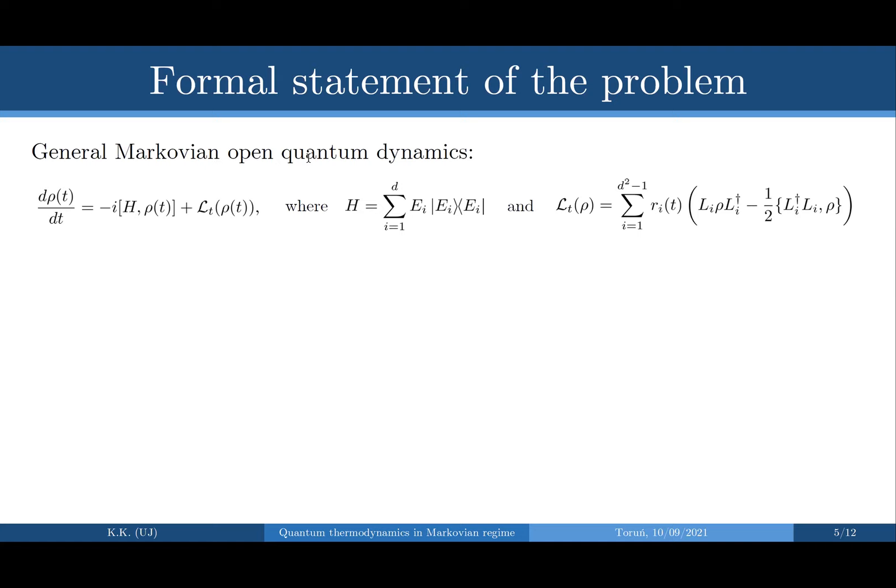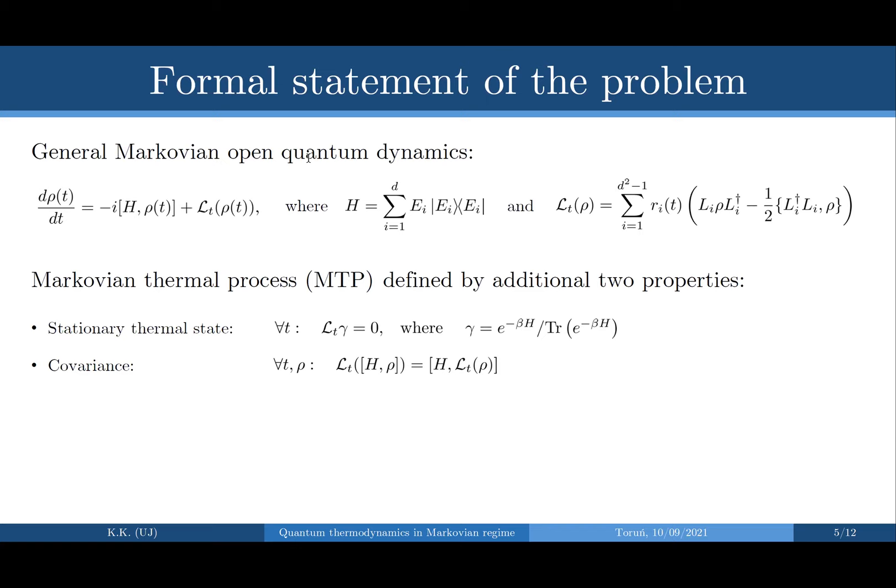To be more specific about how we approach this: we start with a general open quantum system dynamics that is Markovian, so we have a master equation with a unitary part given by the Hamiltonian and a dissipative part described by a Lindbladian with arbitrary time-dependent jump rates. We also add two assumptions. First, the Lindbladian must lead in the long-time limit to thermalization — the thermal state should be stationary. Second, it should be covariant, which encodes total energy conservation at each infinitesimal moment in time. Microscopic derivations of master equations usually do satisfy both of these constraints.